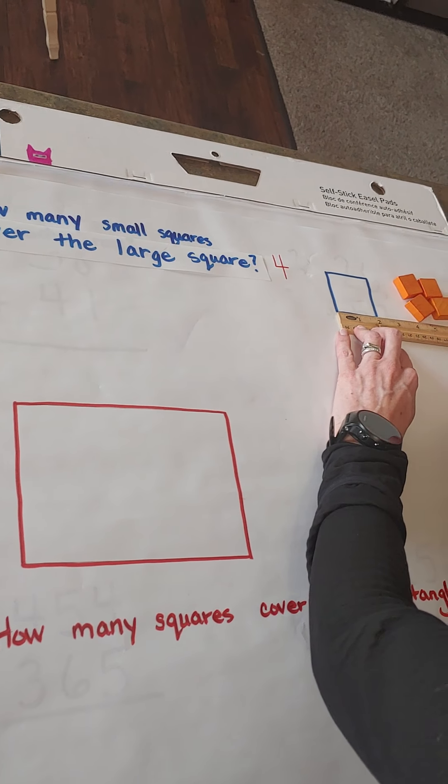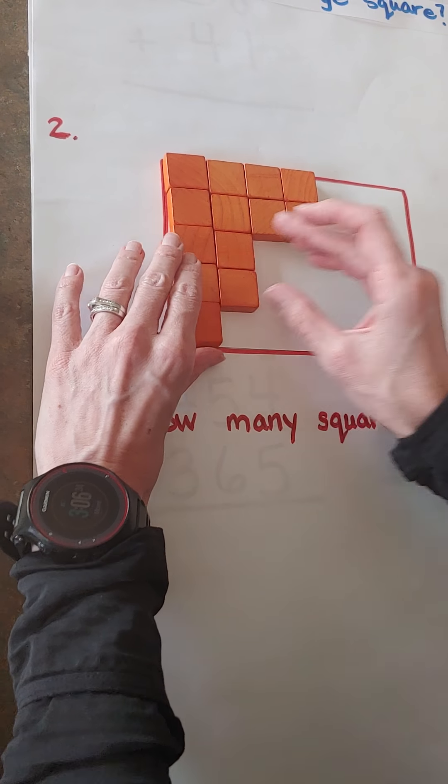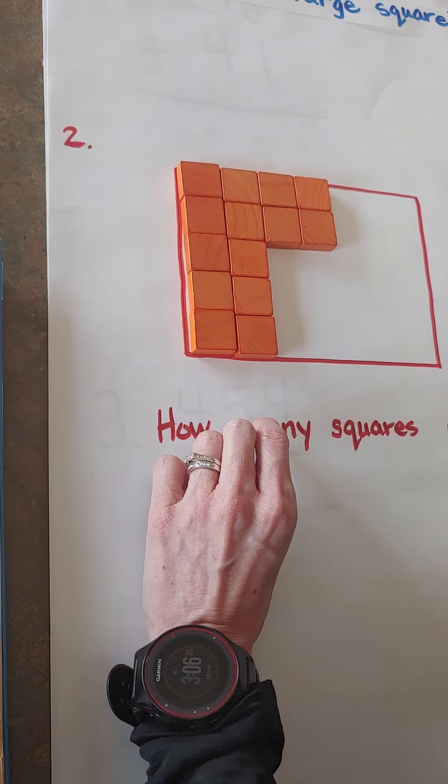Now let's look at this one. How many squares cover the rectangle? And we're still going to use those large squares. So I'm going to cover them — we're going to need a lot here, aren't we, friends? At school, we like to play with these blocks, don't we? We can make some real neat pictures.